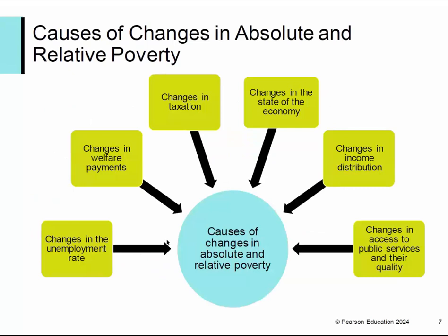This next slide simply summarizes some of the causes of changes in absolute or relative poverty. If you're thinking about a developed country, you may well want to look at things like welfare payments, changes in taxation, and changes in access to public services and their quality as being of particular interest. If you're looking at a developing country, obviously there are all kinds of other things that have an impact as well.